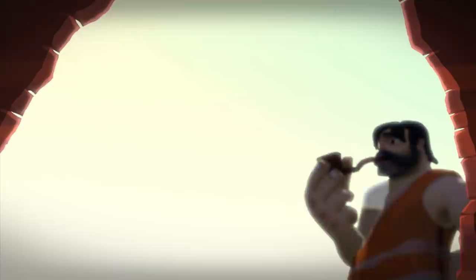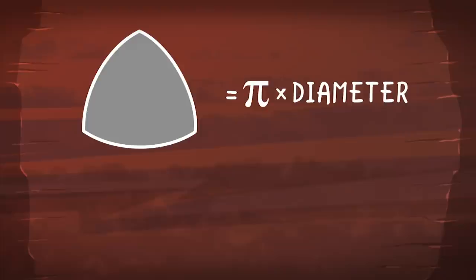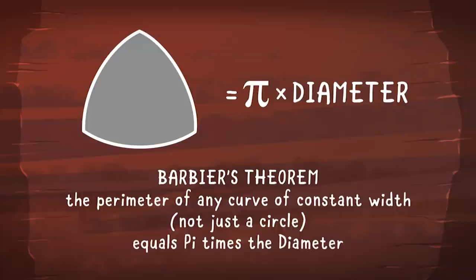This collection of pointy curves fascinates mathematicians. They've given us Barbier's theorem, which says that the perimeter of any curve of constant width, not just a circle, equals pi times the diameter.